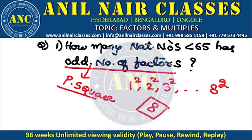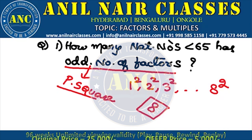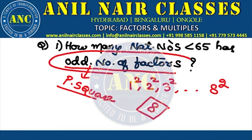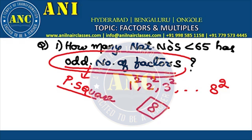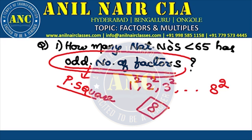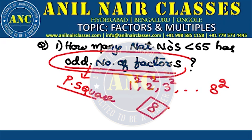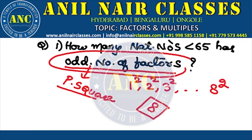Now the root cause of this problem: whenever you are solving any aptitude or maths problem, please identify the key concept. Here, how many natural numbers less than 65 have an odd number of factors — you need to map this to perfect squares.